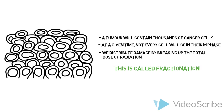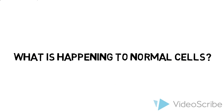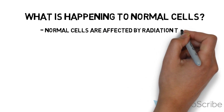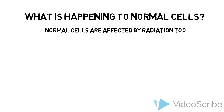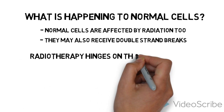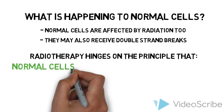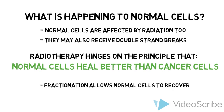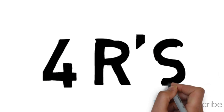You may be wondering what is happening to normal cells in the middle of all of this. Not surprisingly, normal cells are affected by radiation too, and they may also be in their M phase, leading to possible double-strand breaks. Radiation therapy and other cancer treatments hinge on the principle that normal cells heal these defects better than cancer cells. Fractionation also allows normal cells to recover in between treatment fractions.